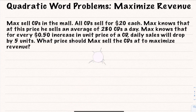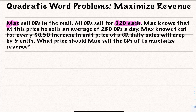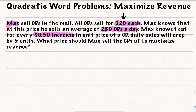Let's take a look at our first problem. We have Max, who is selling CDs in the mall. Max is selling these CDs for $20 each, and at this price, he sells an average of 280 CDs a day. The other thing he knows is that every time he increases the price by 50 cents, he's going to lose five sales for that day.